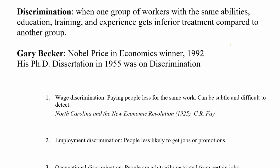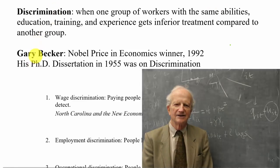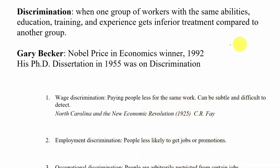In economics, the father of the study of discrimination was Gary Becker, who won the Nobel Prize in economics in 1992. His dissertation at the University of Chicago was on discrimination, making him a true pioneer in thinking about it from an economic perspective — applying costs, benefits, utility, decision-making, and marginal analysis to try to measure and describe discrimination scientifically.